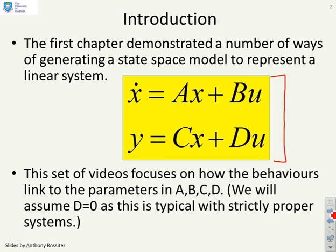Now this set of videos focuses on how the behaviors of this system link to the parameters in A, B, C and D. But you should note that we're going to assume that D equals 0 throughout, because this is typical with strictly proper systems.